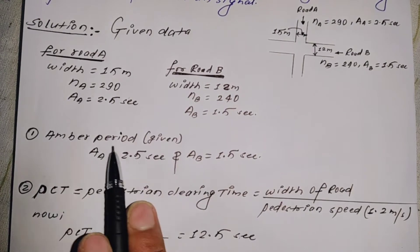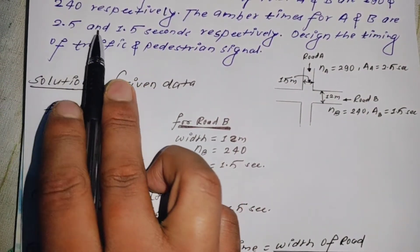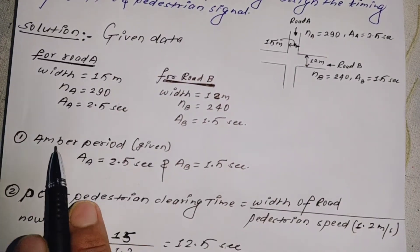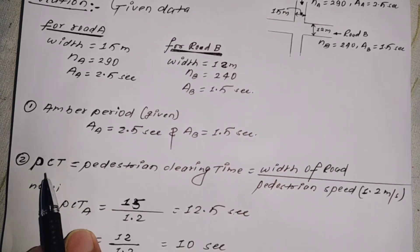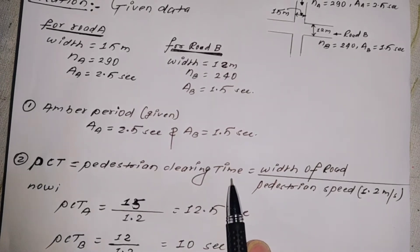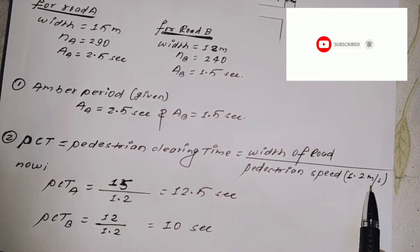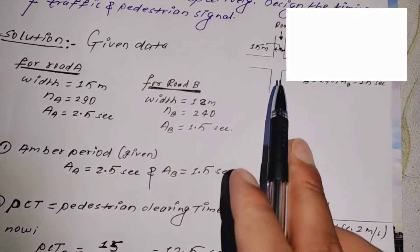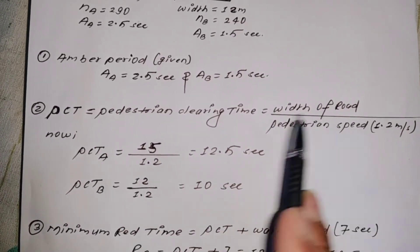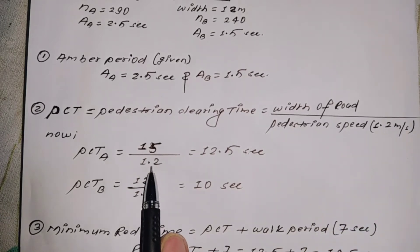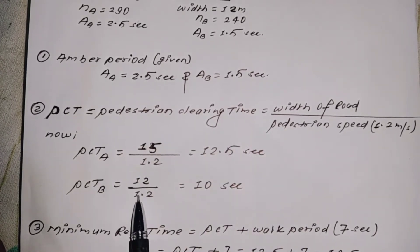Step one: calculate the pedestrian clearing time (PCT). The formula is: PCT = width of road divided by pedestrian speed. Pedestrian speed is 1.2 meters per second. For Road A, width is 15 meters, so PCT for Road A = 15 divided by 1.2 = 12.5 seconds.